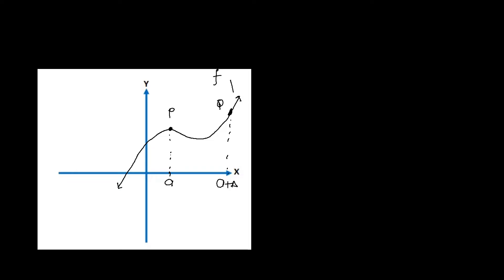If we have a point P on the curve, the x-value there is named as our a. Somewhere else on the curve, we have another point Q. The corresponding x-value for Q is a plus delta x, because we're changing x by a delta x. The corresponding y-value for point P is f of a, since f of x is the same as y.